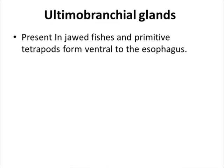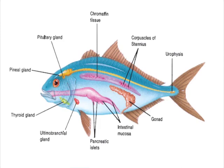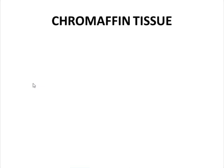The ultimobranchial gland is present in jawed fishes and primitive tetrapods, located ventral to the esophagus. This gland produces the hormone calcitonin, which helps regulate the concentration of calcium in the blood. In the diagram you can see the ultimobranchial gland near the esophagus, along with the thyroid gland and the pineal gland.